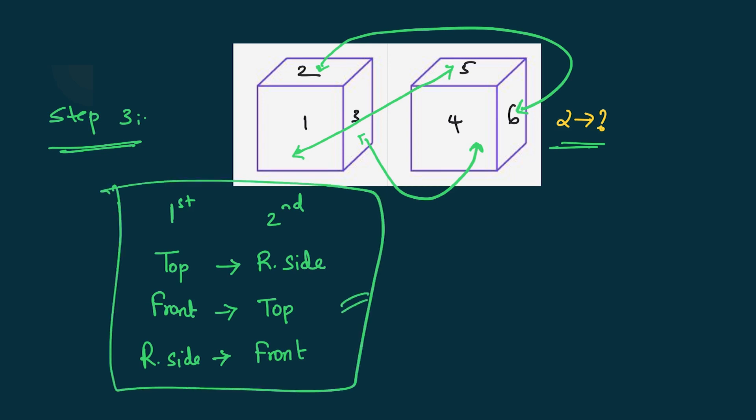Note this logic somewhere so it's easy to recall. Applying it, you can conclude that six is the opposite number of two.